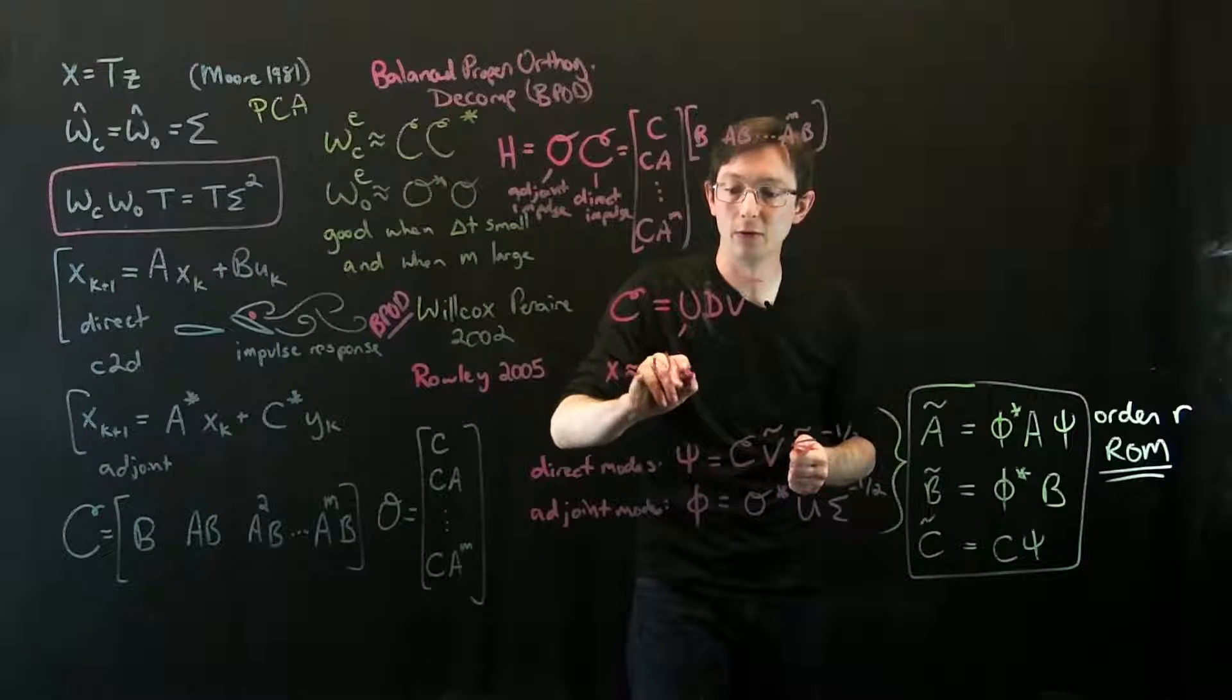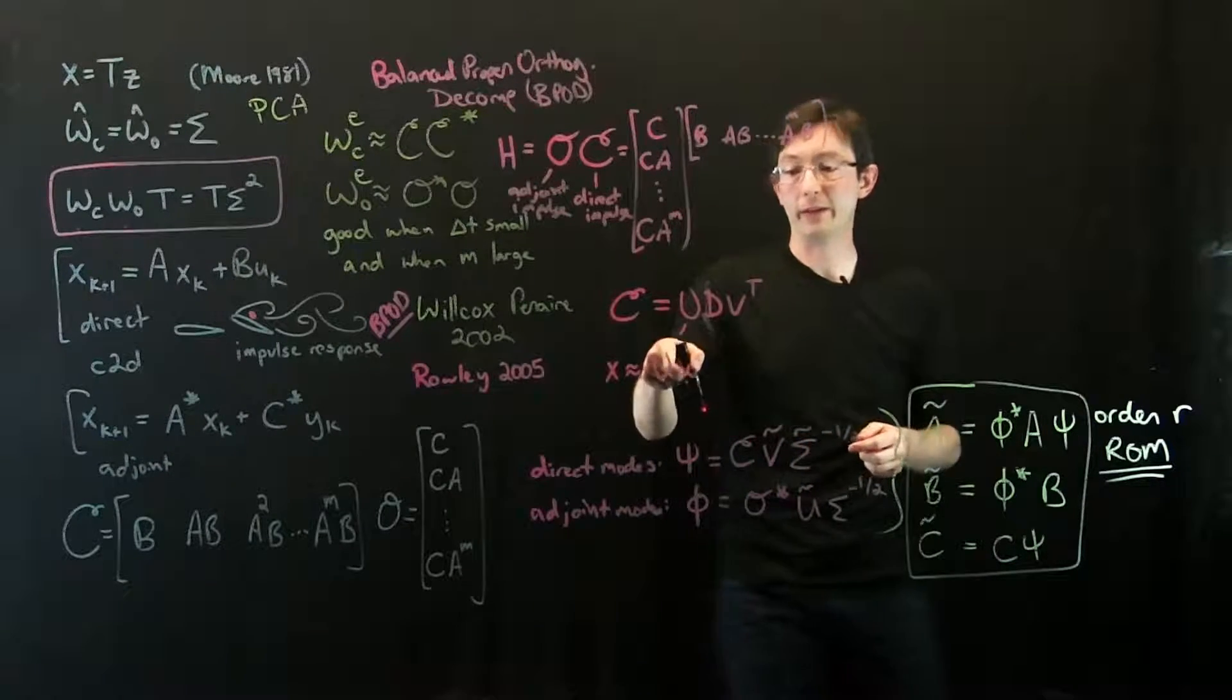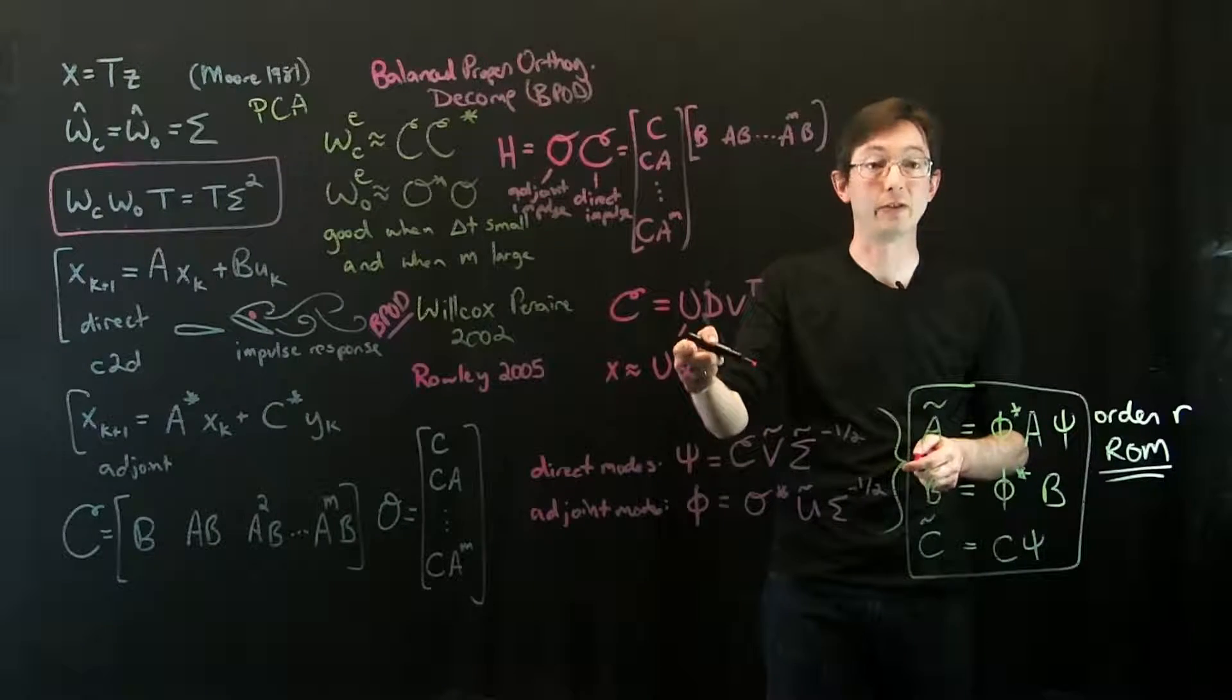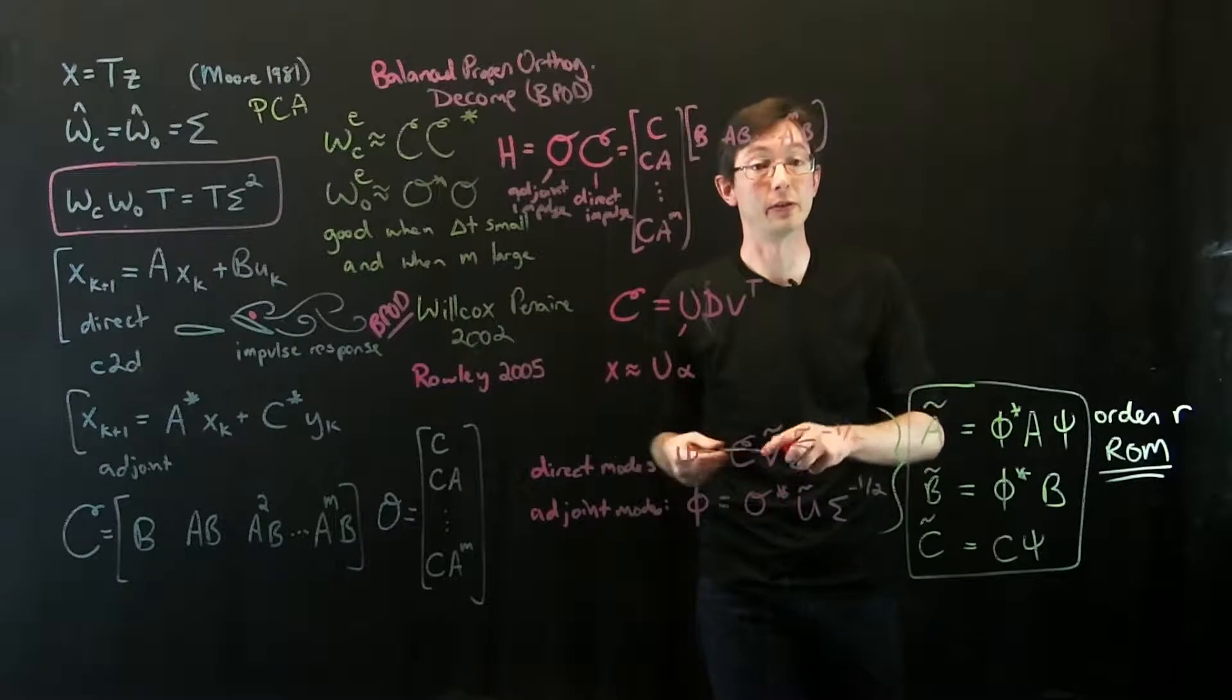So basically this says X is pretty well approximated by U alpha, where I keep the first let's say five columns of U and then this is a five dimensional vector telling me the mixture of those modes.